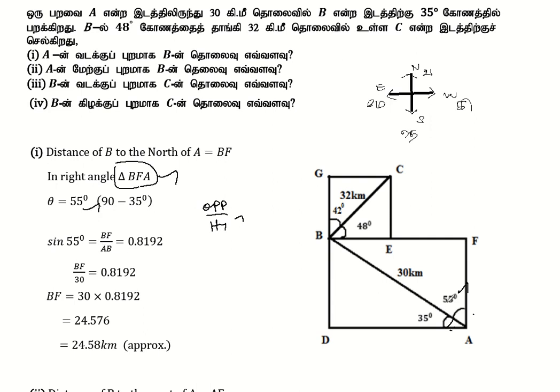Sin 55 degrees is equal to sin theta. BFA is equal to sin theta. So BFA hypotenuse theorem is AB. Sin 55 is equal to BF over 30, which equals 0.8192. So BF equals 30 times 0.8192, which is 24.576. The distance is equal to 24.58 kilometers approximately.